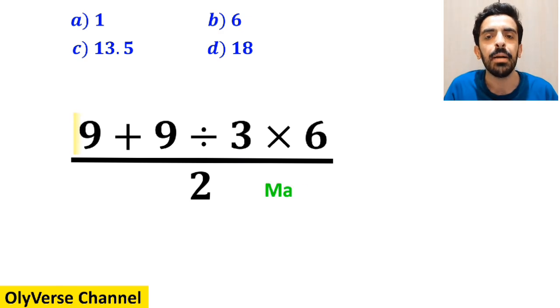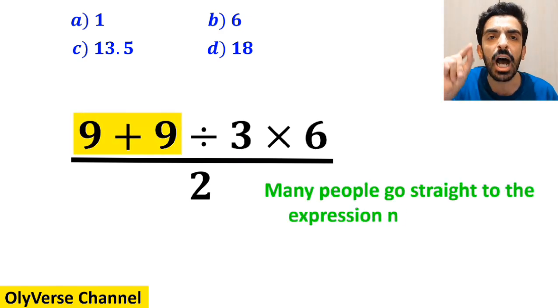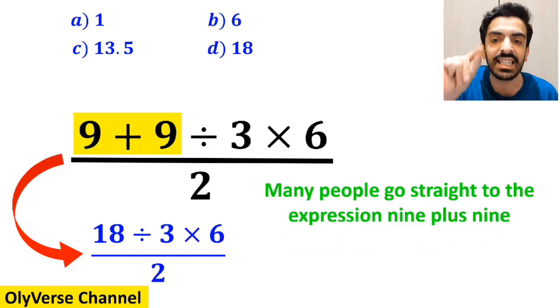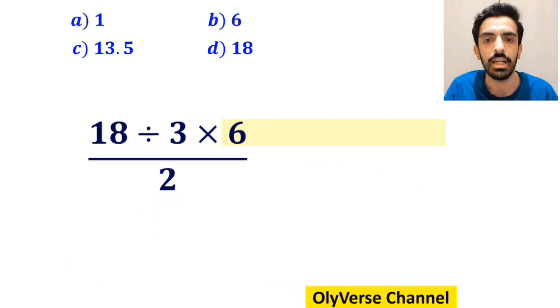The first step to solve this question, many people go straight to the expression 9 plus 9 in the numerator of this fraction and replace the whole expression with 18 divided by 3 then times 6 over 2.